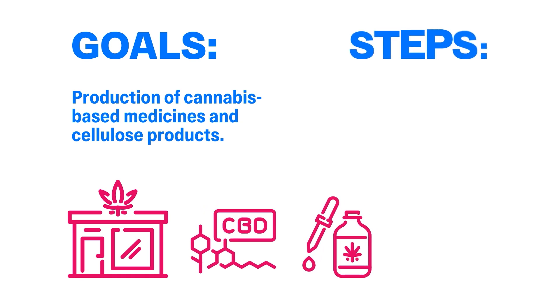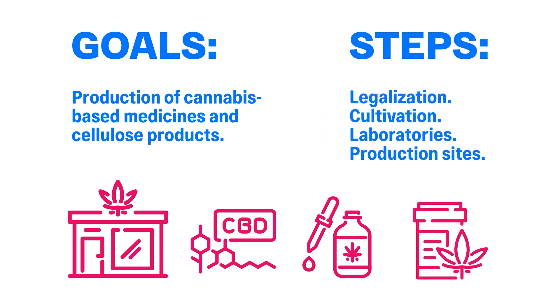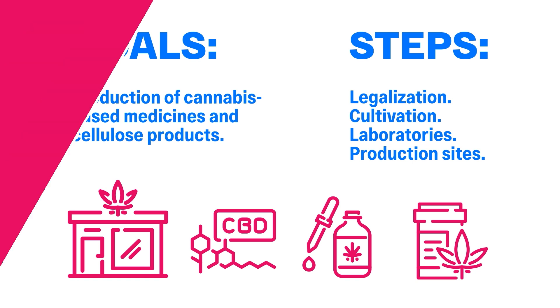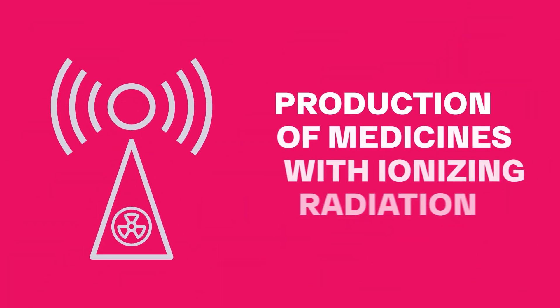Cannabis: Goal — production of cannabis-based medicines and cellulose products; drugs for the treatment and relief of symptoms of various diseases. Steps: Legalization, cultivation, laboratories for researching medicines for the possible treatment of previously unexplored diseases, and production sites.